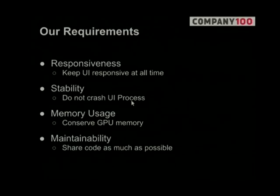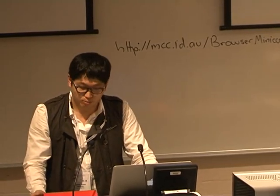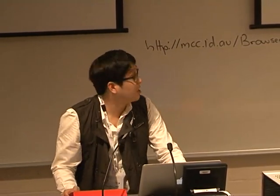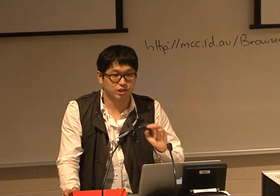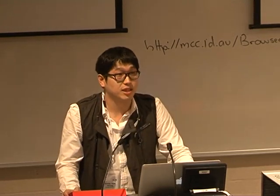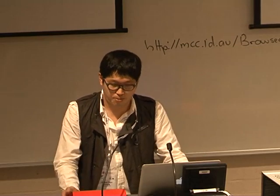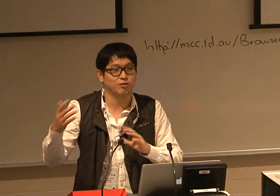Our requirements are: first, responsiveness — we want a fast response at all times when there is user interaction, whether scrolling, zoom, clicking a link, or UI events like back/forward/address buttons. Second, stability — especially in WebKit2, we do not want the UI process to crash. Third, memory usage — in embedded systems there is very limited GPU memory, so we have to conserve it. Fourth, maintainability — we should share code as much as possible with other ports so we can maintain and improve it together.